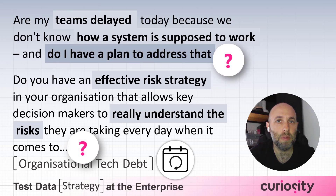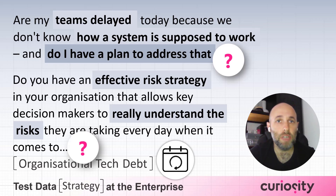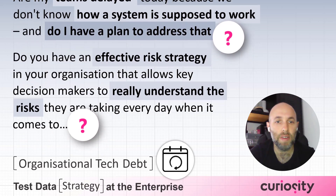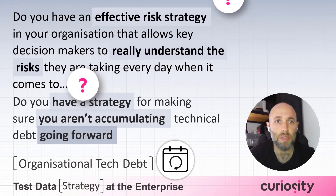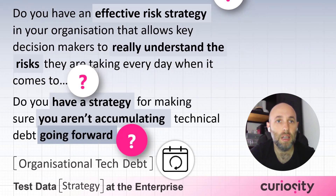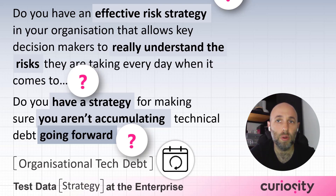Are my teams delayed today because we don't know how a system is supposed to work? Do I have a plan to address that? Do you have an effective risk strategy in your organisation that allows key decision makers to really understand the risks they are taking every day when it comes to technical debt? And do you have a strategy for making sure you aren't accumulating technical debt going forward?